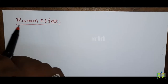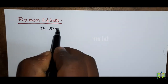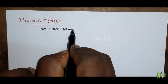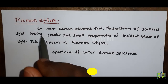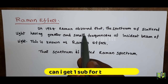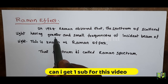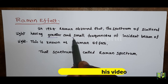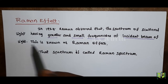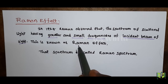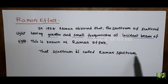Now we see the definition of the Raman effect. In 1928, Raman observed that the spectrum of scattered light has greater and smaller frequencies than the incident beam of light. This is known as the Raman effect. That spectrum is called the Raman spectrum.